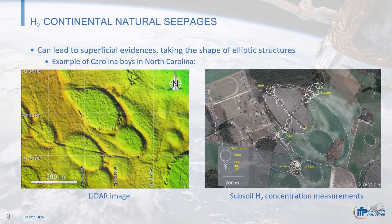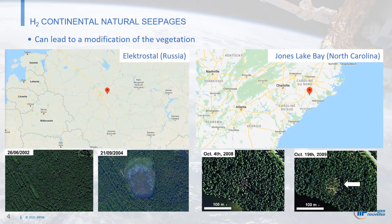The observations of LiDAR images in areas with high hydrogen emanations show specific topographic structures. The effect is the depression of the surface forming oval-shaped rings. These elliptic structures are associated with a local topographic depression and a modification of the vegetation.